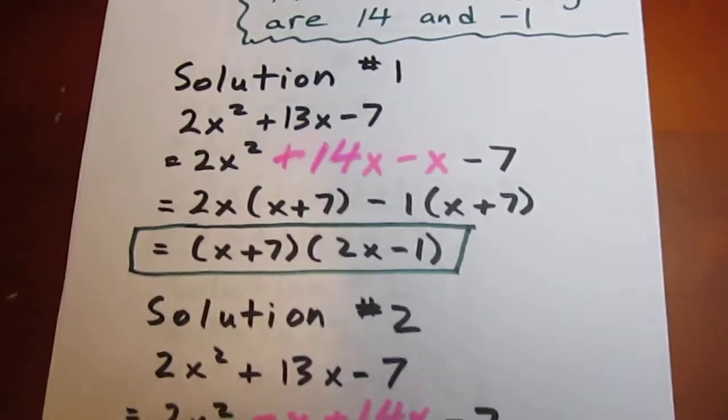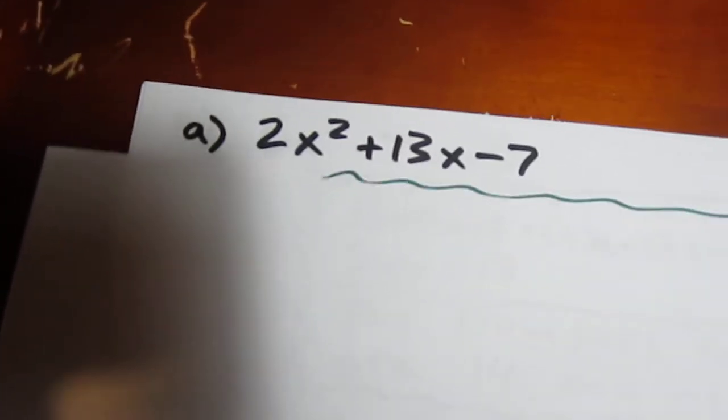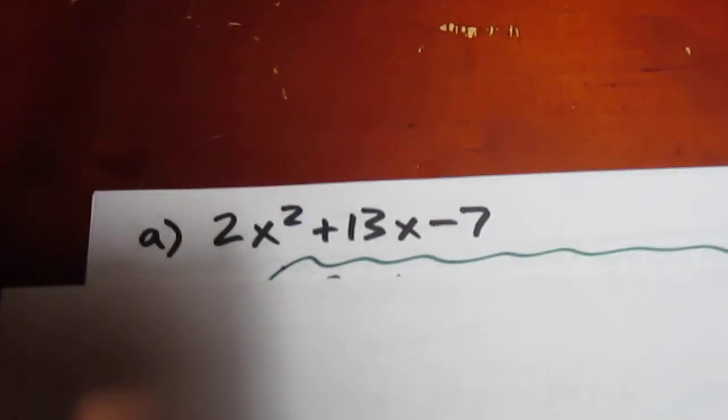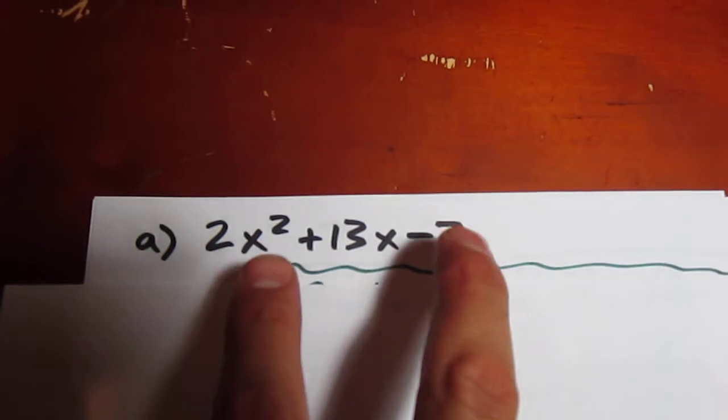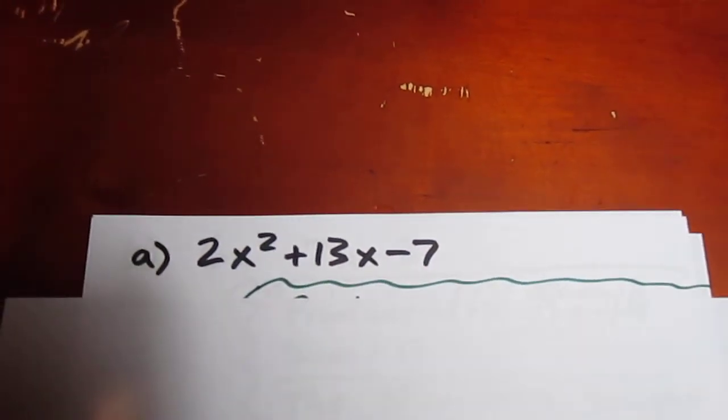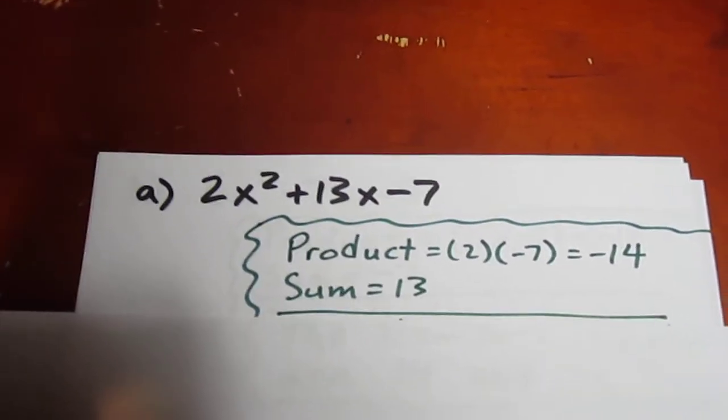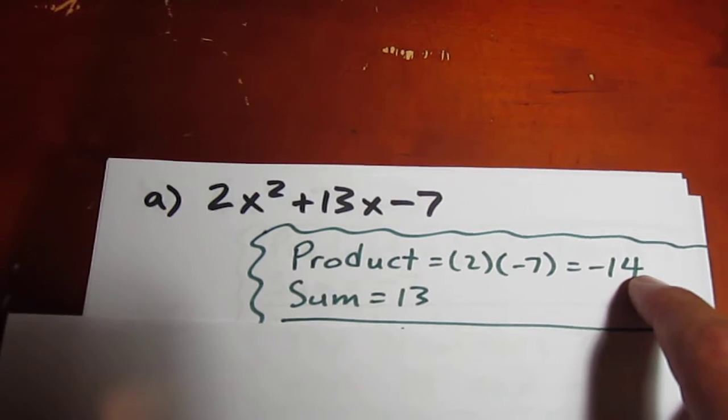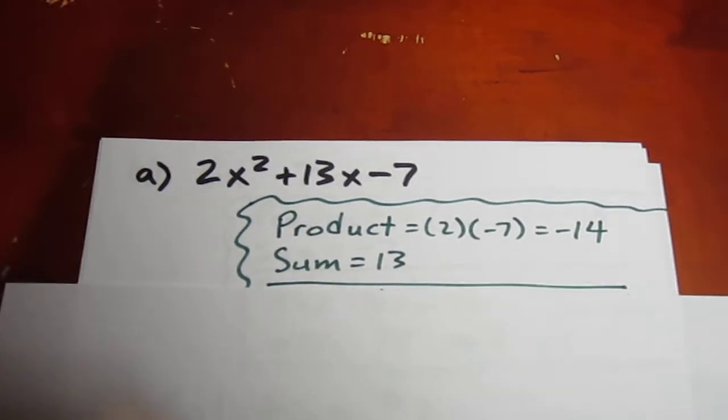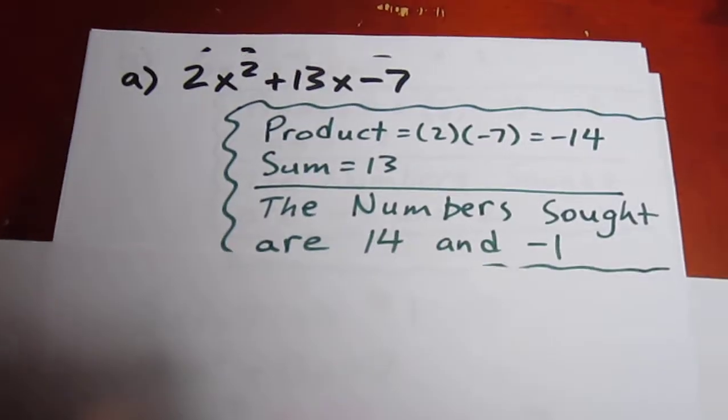The first question asks us to factor the polynomial 2x² + 13x - 7. The method of decomposition requires us to multiply the first and last coefficient. And that gives us -14. So what we want are two numbers with a product of -14 and a sum of 13. Those two numbers are positive 14 and negative 1.